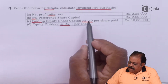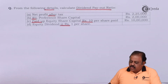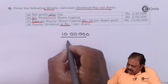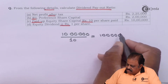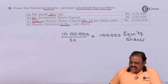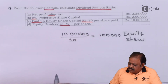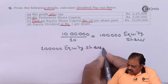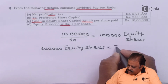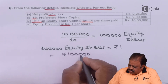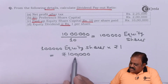Paid-up equity share capital is Rs. 10 per share and total amount is Rs. 10 lakhs. So the number of equity shares is 10 lakhs divided by 10, which gives 1 lakh equity shares. Equity dividend is Rs. 1 per share, so 1 lakh equity shares multiplied by Rs. 1 per equity share gives a total equity dividend of Rs. 1 lakh.